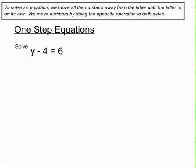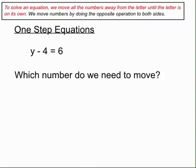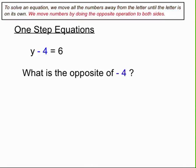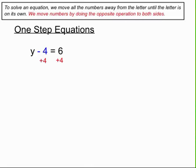We're asked to solve y minus 4 equals 6. Which number do we need to move? We're aiming to get the letter on its own, so we need to move that minus 4. What's the opposite of minus 4? That's a plus 4. So we do plus 4 to both sides of the equation. On the left-hand side, the minus 4 and the plus 4 cancel each other out, leaving the letter on its own. On the right-hand side, 6 plus 4 equals 10, and we've got our final solution.